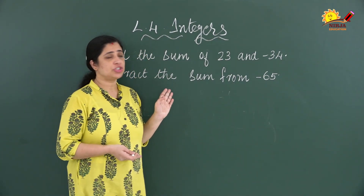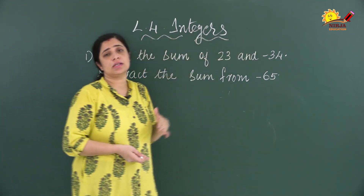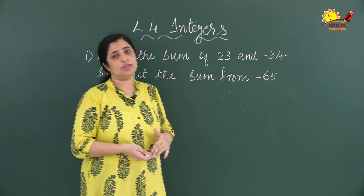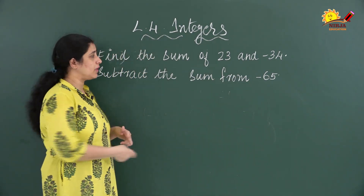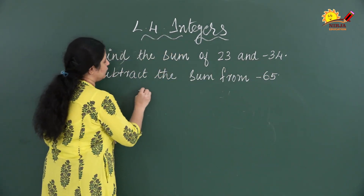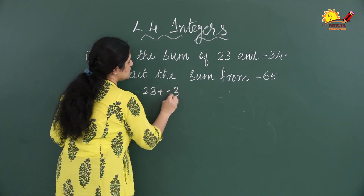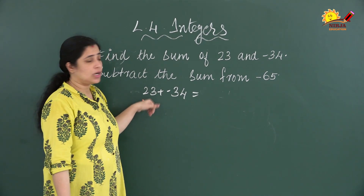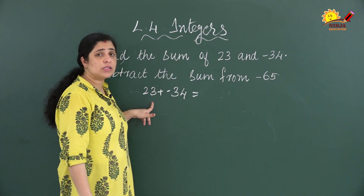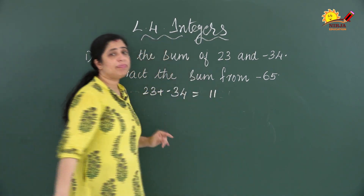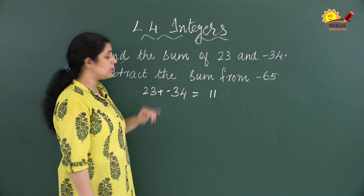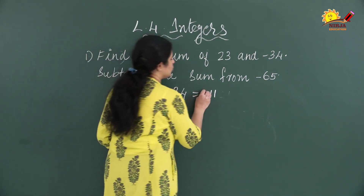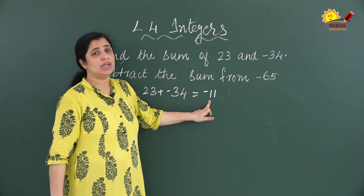Now we will do a sum related to integers. The question is: find the sum of 23 and minus 34, then subtract that sum from minus 65. First, find the sum of 23 and minus 34: one number is negative and the other is positive, so do the subtraction — 34 minus 23 equals 11. The sign of the bigger number, 34, is negative, so the answer is negative 11.